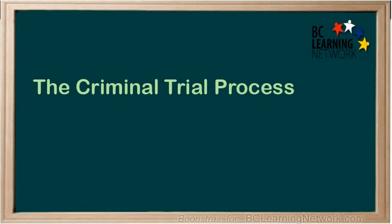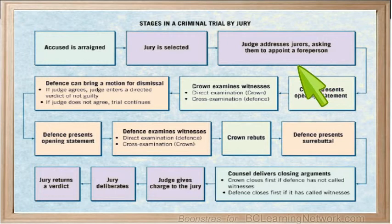After a jury has been selected, here are the steps of a criminal trial. The judge explains to the jury their role as the trier of facts. The jury then selects a foreperson who will represent them and communicate with the judge, as well as lead the jury through deliberations and read the verdict at the end of the trial.